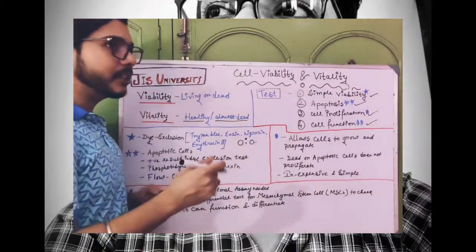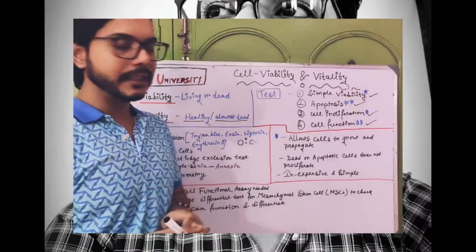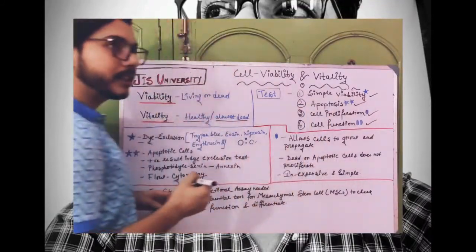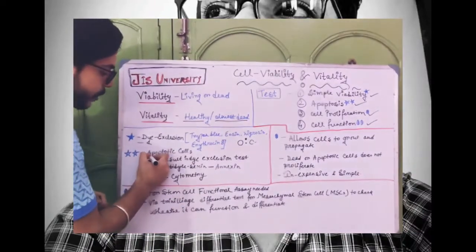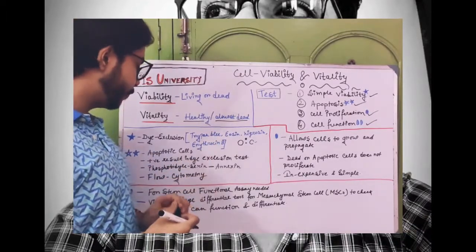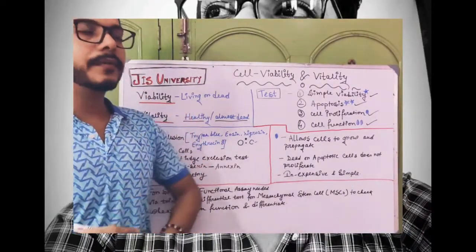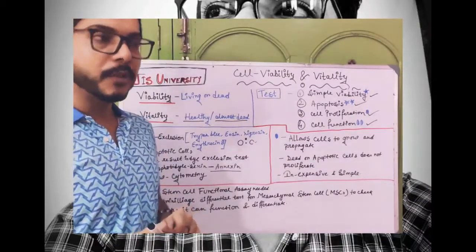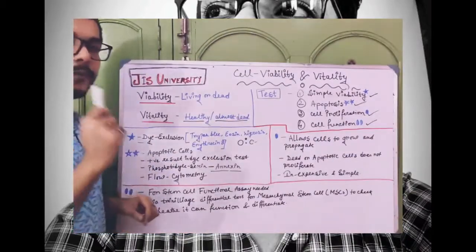But if this cell is under the apoptotic process, after a few minutes its cell membrane will be ruptured. In the dye exclusion test, you won't be able to understand that. So in that case, we can go for the apoptosis test or apoptotic cycle test. Here, cells which are in the apoptotic cycle may give a positive result in the dye exclusion test. But in the apoptosis test, a particular type of dye called annexin is used, because annexin attaches with a particular type of agent called phosphatidylserine.